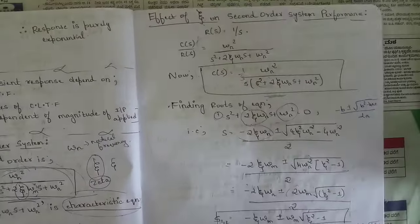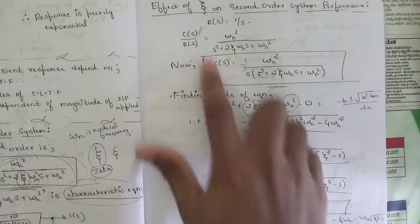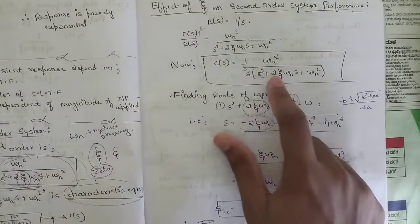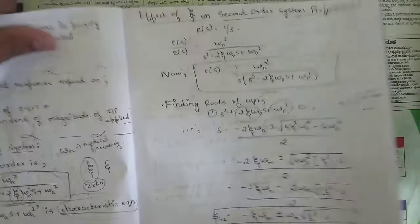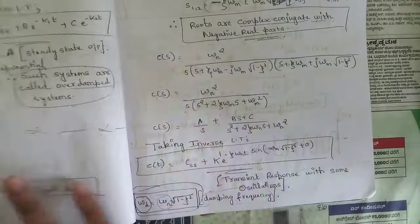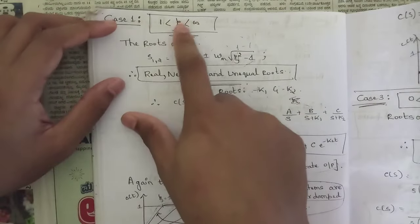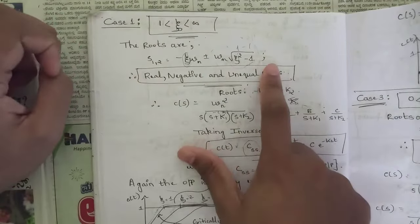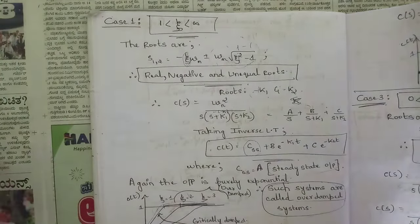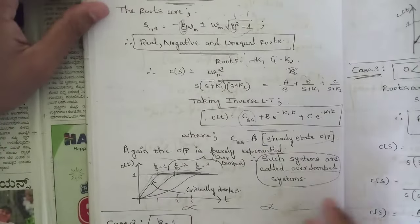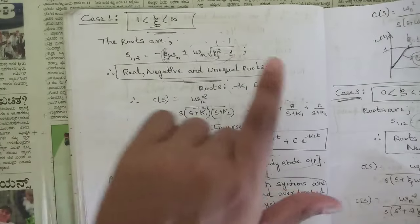We analyzed the effect of ζ on the second order system by applying input R(s) = 1/s and finding the roots of the characteristic equation. The roots are expressed in terms of ζωₙ (alpha) and ωₙ√(1 − ζ²) (omega_d). Different cases arise depending on the value of ζ. When ζ lies between 1 and infinity, the response is over-damped, with real, negative, and unequal roots.